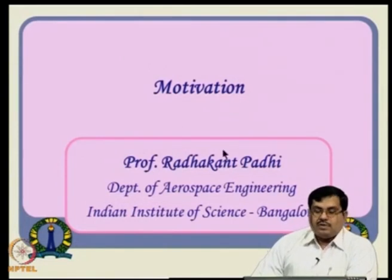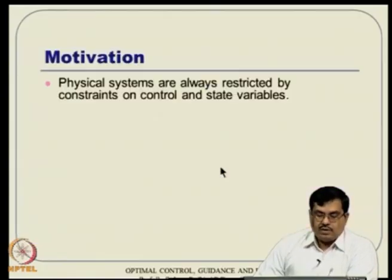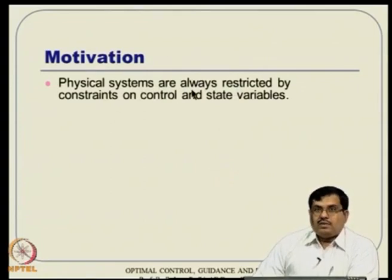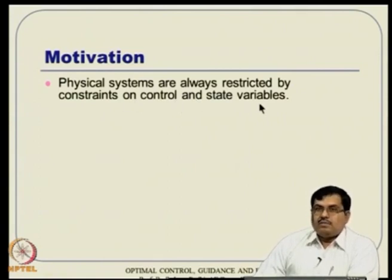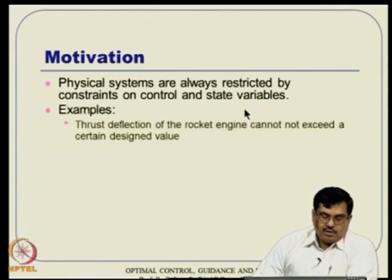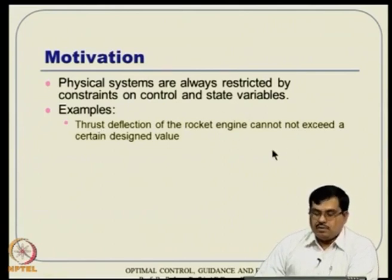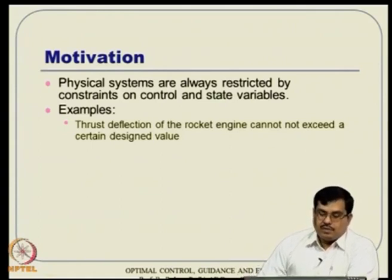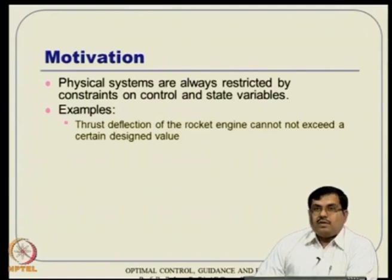A little bit of motivation for why we want to study this topic. Physical systems are always restricted by constraints on both control as well as state variables — that is a reality we cannot escape from. For example, rockets are controlled by thrust deflection angle. Typically the engine is swiveled in a little lateral direction, so the thrust has a component in the vertical direction and also a component in the horizontal, lateral direction.